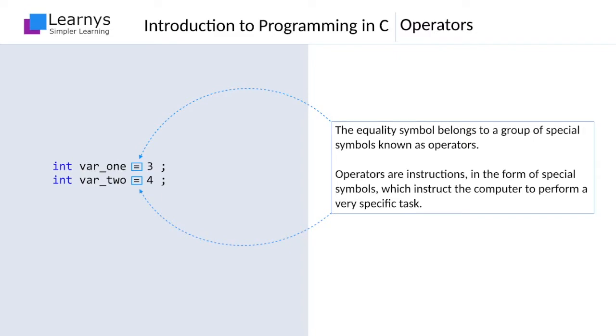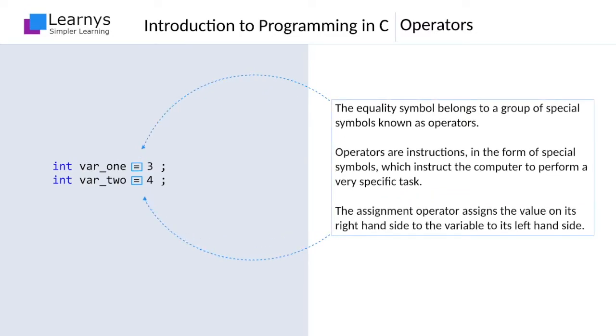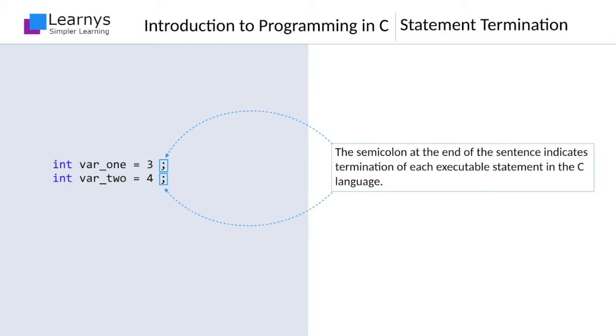If there is an expression on the right-hand side, it is first evaluated and then the evaluated value is assigned to the variable on the left-hand side. The assignment operator in these two statements will assign 3 and 4 to var_one and var_two respectively. You should notice that each sentence is ending with a semicolon. This is how we terminate each standalone executable statement in C language.